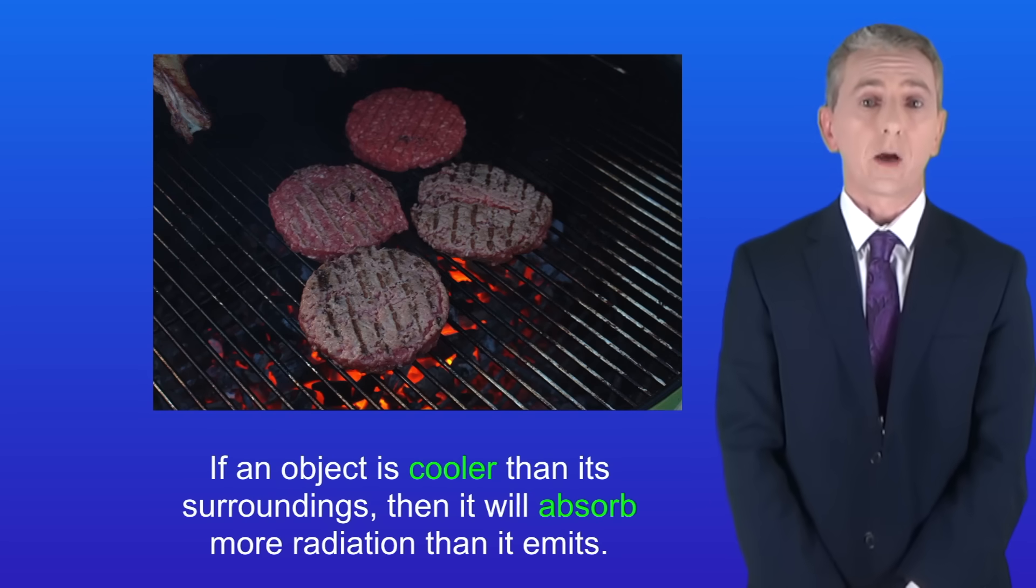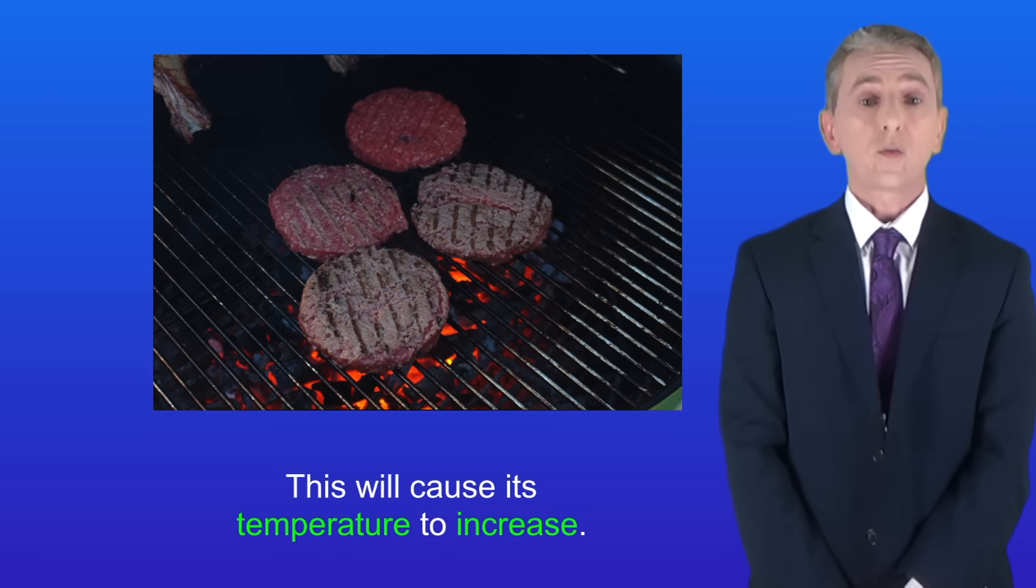If an object is cooler than its surroundings then it will absorb more radiation than it emits, and this will cause its temperature to increase. A good example are these burgers on a barbecue.